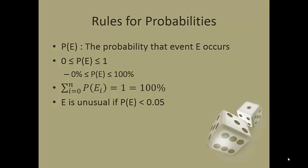So our rules for probability, these are just some basic setup. When I say P of E, P parentheses event E, this is the probability that event E occurs. This is just a notation. That probability is going to be somewhere between 0 and 1, or if it's easier for you to think about between 0% and 100%.